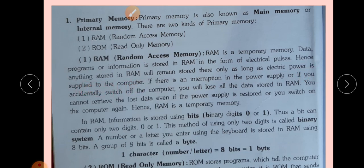That means the information stays only as long as power supply is available. Once the power supply is gone, the information is gone too. If there is an interruption in power supply, or if you accidentally switch off the computer, you will lose all stored data in RAM. You cannot retrieve the lost data even if the power supply is restored.